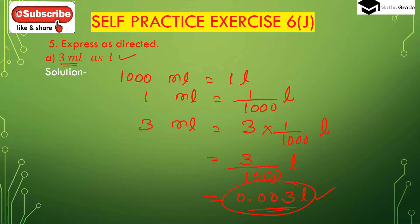So 3 ml is equal to 0.003 liter. This is the answer.